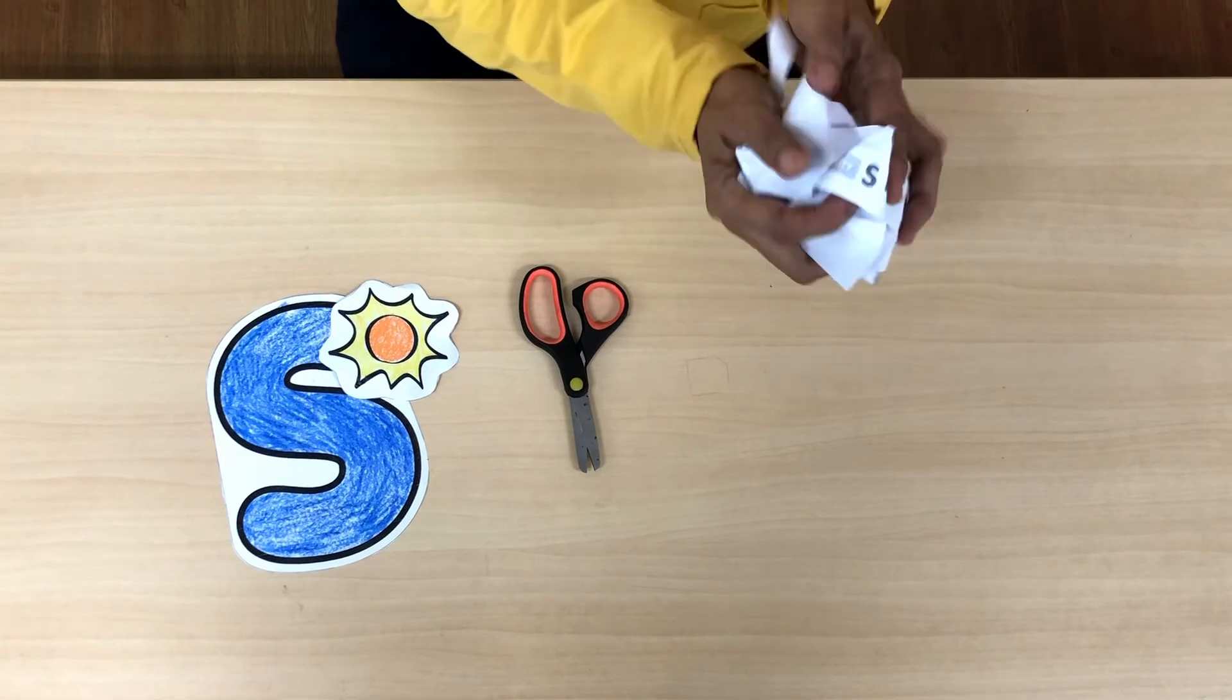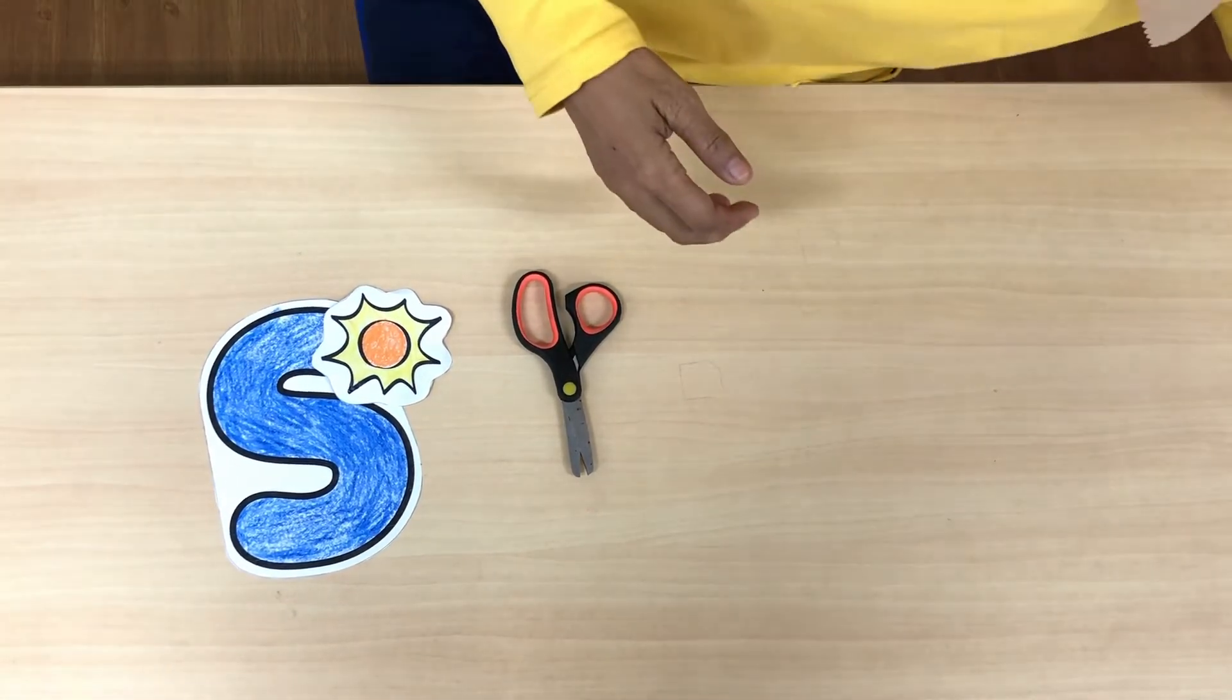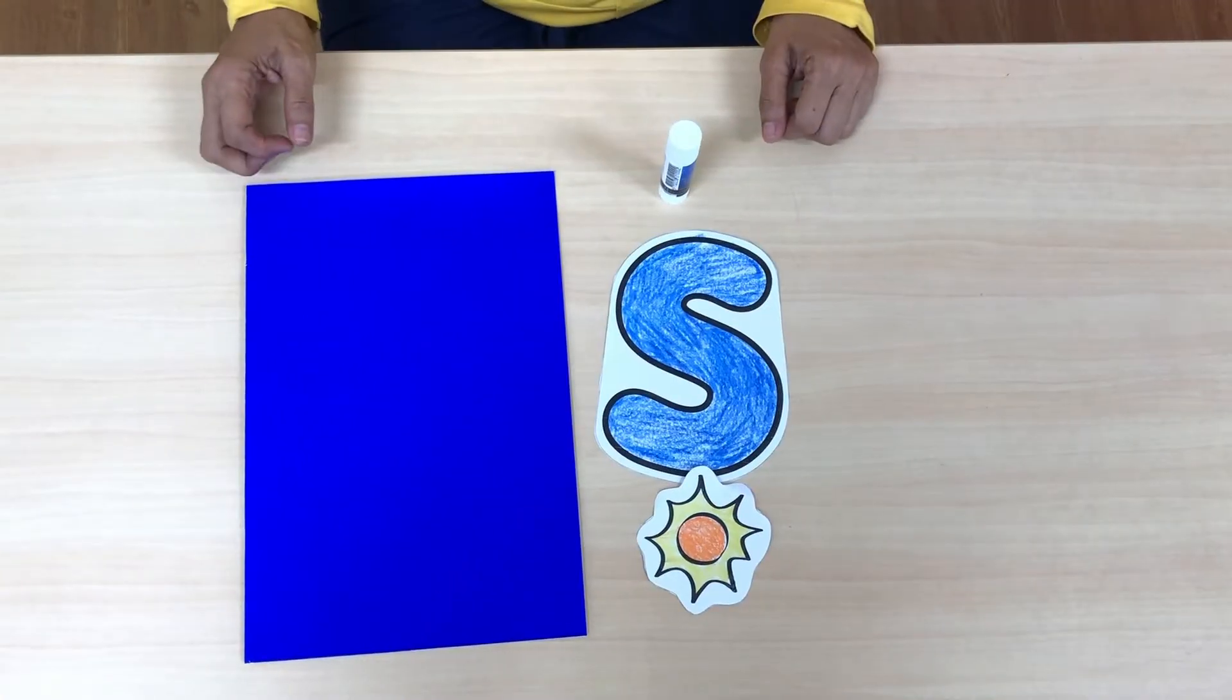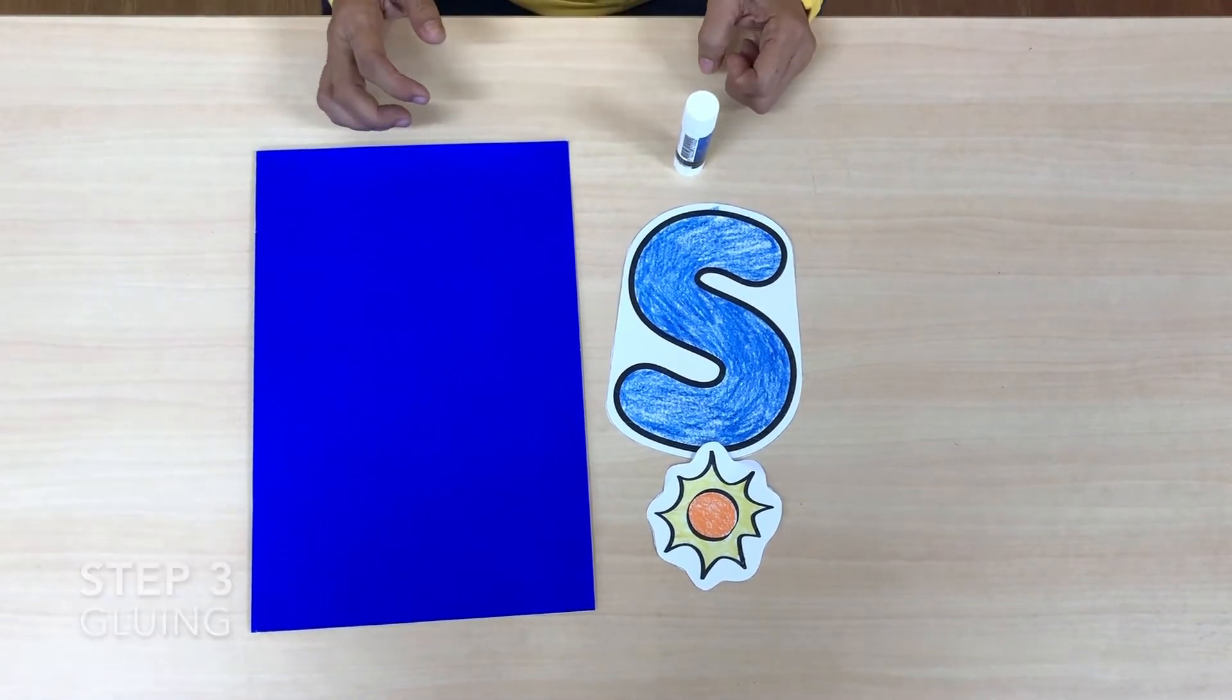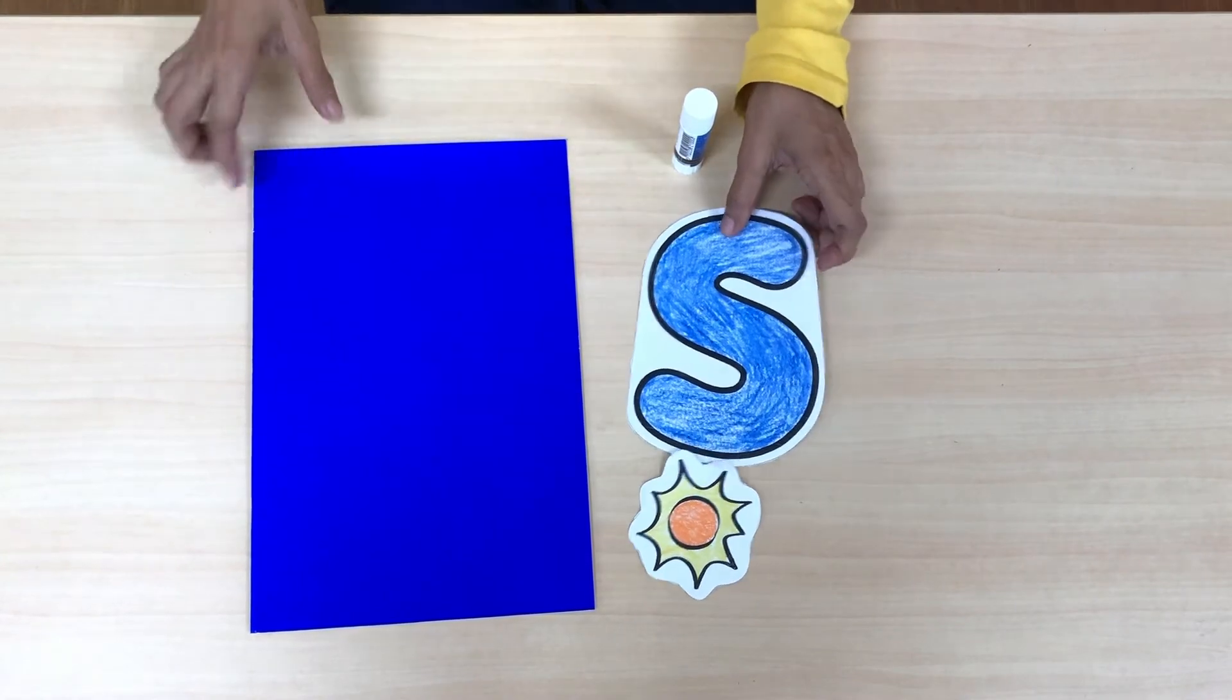And then you can cross the beam. Okay, step 3, gluing. Finally we will glue letter S on the blue paper, the white one. Take off the lid.